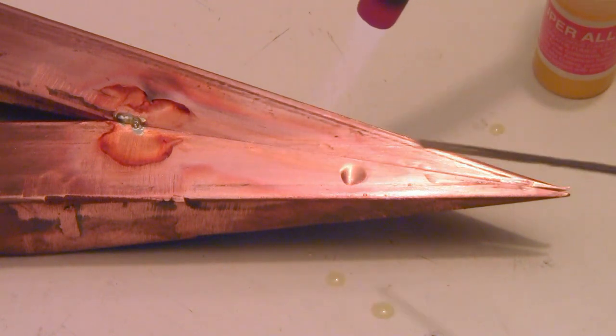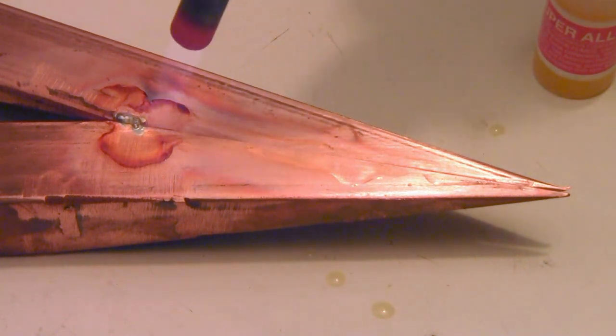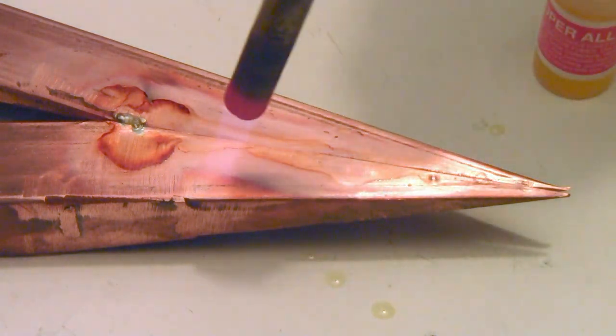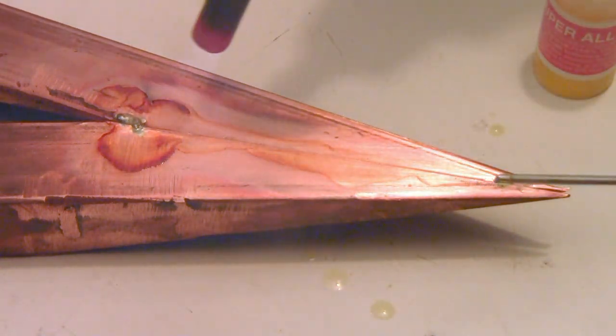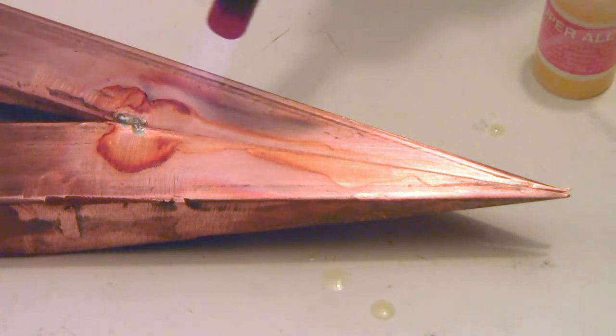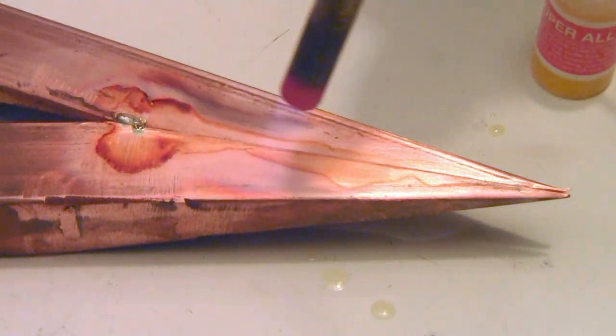The super alloy one rod melts at 350 degrees Fahrenheit. You can get to that temperature very quickly especially on thin pieces. The color change of the super alloy one flux tells you where you are in the soldering process and should give you a better result.